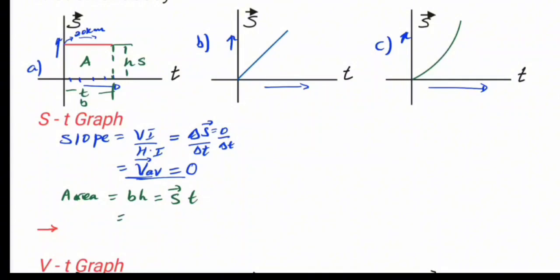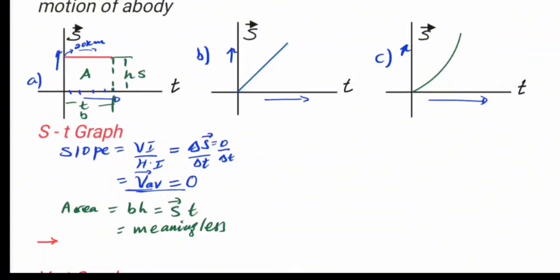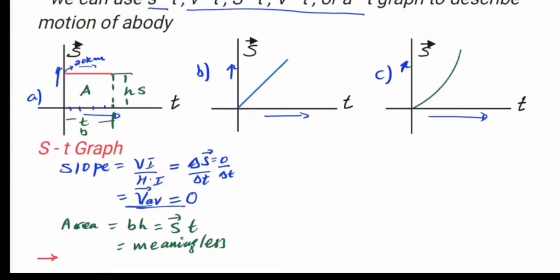Calculating the area under a displacement versus time graph or distance versus time graph is meaningless — it gives no useful physical quantity. Now consider when the displacement versus time graph is inclined and straight versus when it is horizontal.